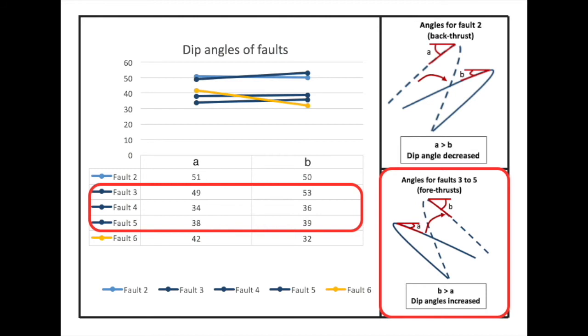Similarly, the angles for the forethrusts change and become larger as the wedge grows and the faults tilt backwards.